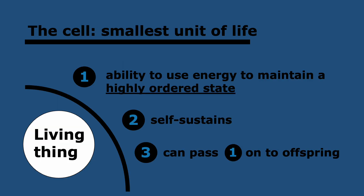Now let's look at what a cell is and why it is the smallest unit of life. What even is a living thing? It's not a simple definition — we need to define some conditions. There are three. The first is that it must have the ability to use energy to maintain a highly ordered state. Cells are highly ordered structures — they have DNA inside them and different sub-compartments, so they meet this requirement.